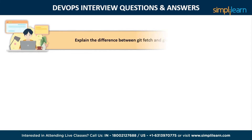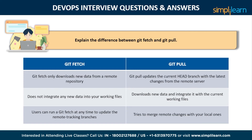Next is: explain the difference between Git Fetch and Git Pull. Git Fetch only downloads new data from a remote repository, whereas Git Pull updates the current head branch with the latest changes from the remote server. Git Fetch does not integrate any new data into working files, whereas Git Pull downloads new data and integrates it with the current working files. Users can run Git Fetch at any time to update the remote tracking branches, whereas Git Pull tries to merge remote changes with your local ones.